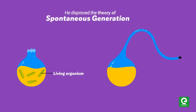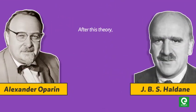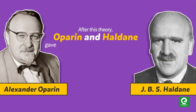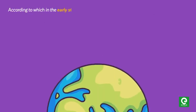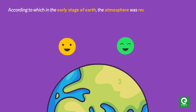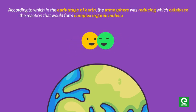In the flask kept open to air, new living organisms arose, and he thereby disproved the theory of spontaneous generation. After this, Oparin and Haldane gave a hypothesis for chemical evolution, according to which in the early stages of Earth, the atmosphere was reducing, which catalyzed reactions that would form complex organic molecules from simpler molecules.